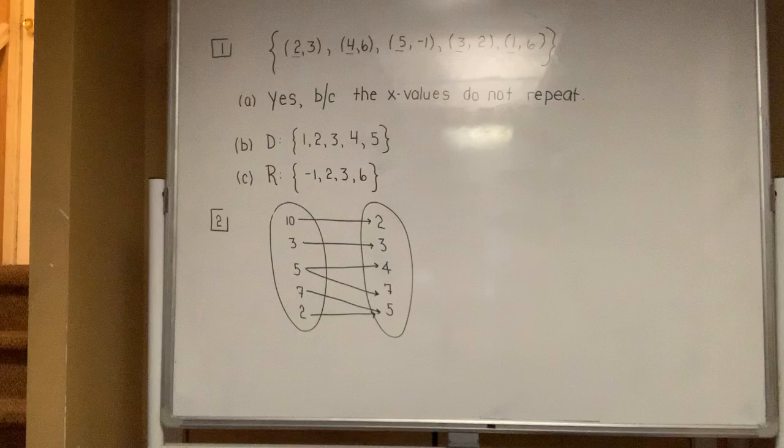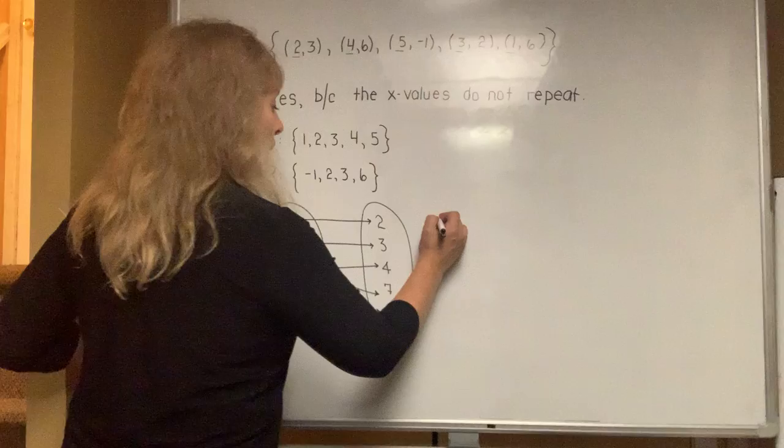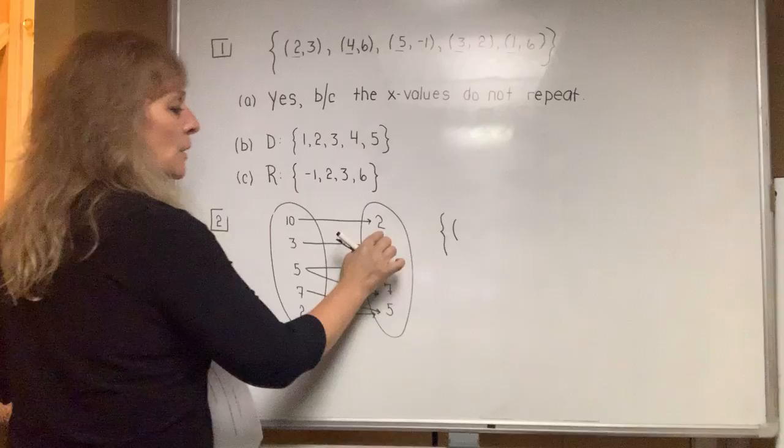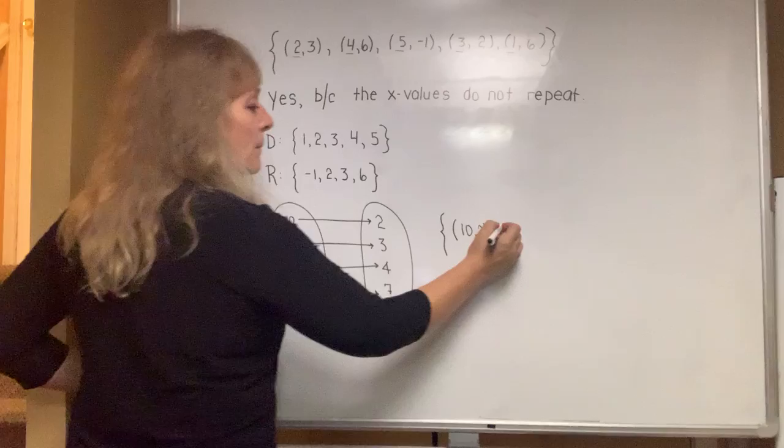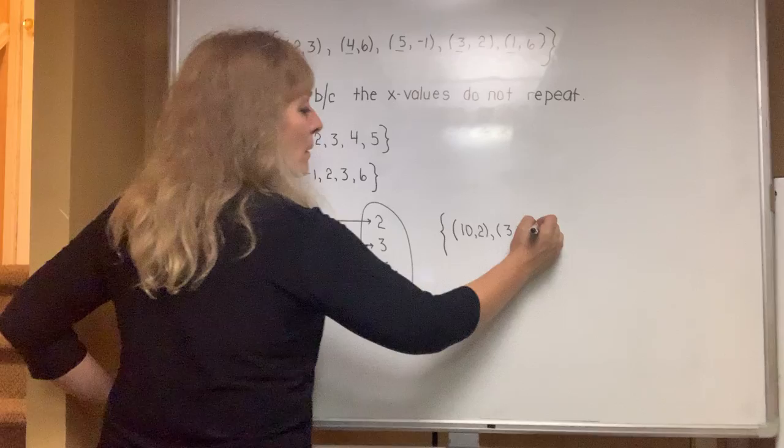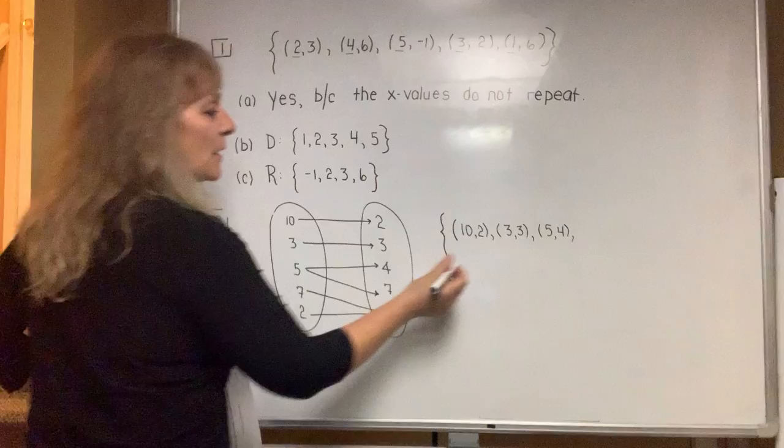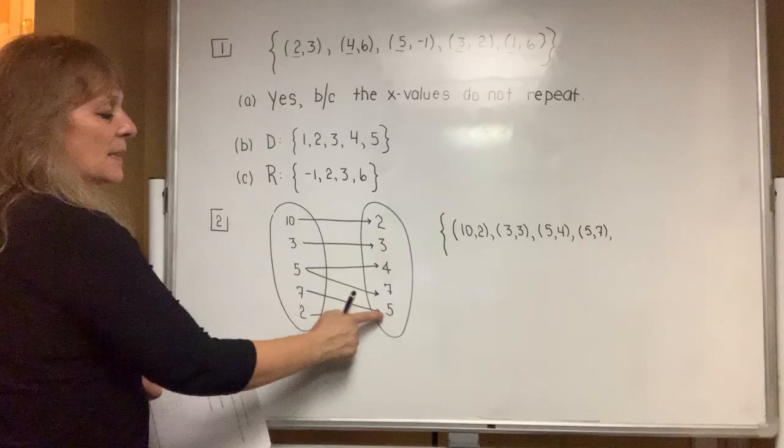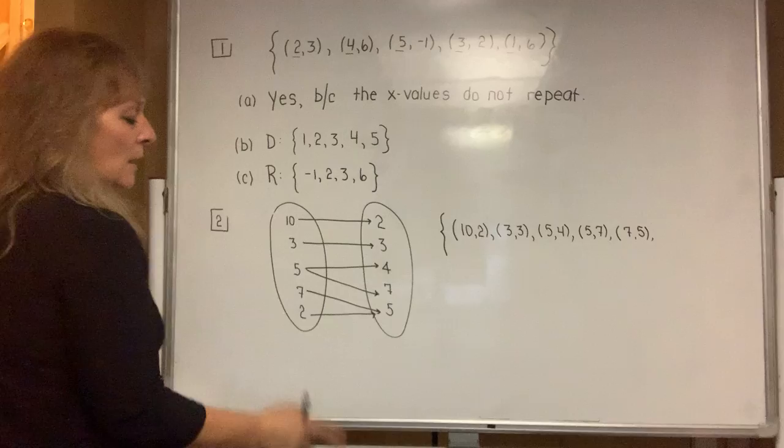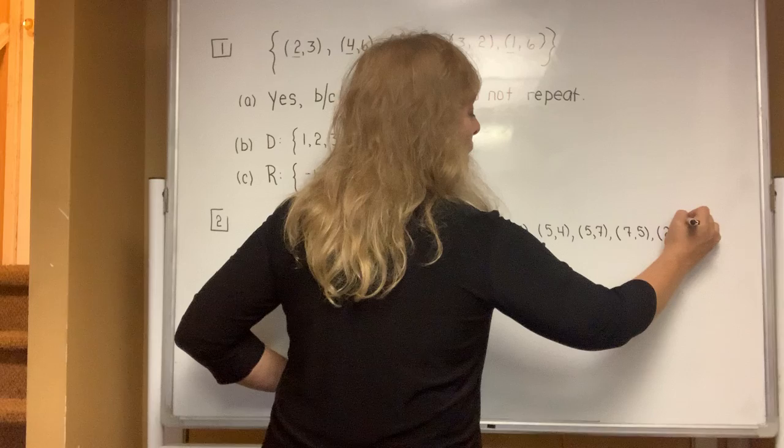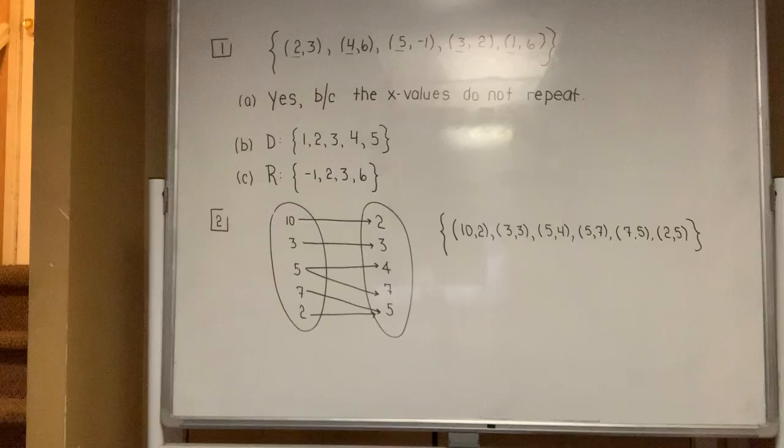What they are showing you is another way to display a relation. This represents the set of the point (10,2), the point (3,3), the point (5,4), the point (5,7), and the point (2,5). So that diagram represents 6 points.